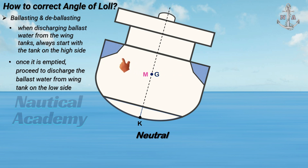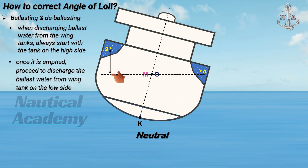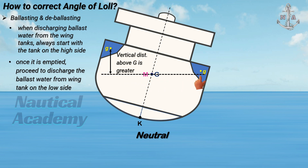Why do we start with the tank on the high side? Assuming that the center of gravity of ballast water inside the tank is at the high side, and at the low side marked with small letter G, the vertical distance of the weight's center of gravity on the high tank above the ship's center of gravity is greater than the vertical distance on the tank at the low side. So the ballast water on the high tank has a greater effect on the rise of the ship's G. If we eliminate the effect of this small G, it will have a greater effect on lowering the ship's center of gravity.